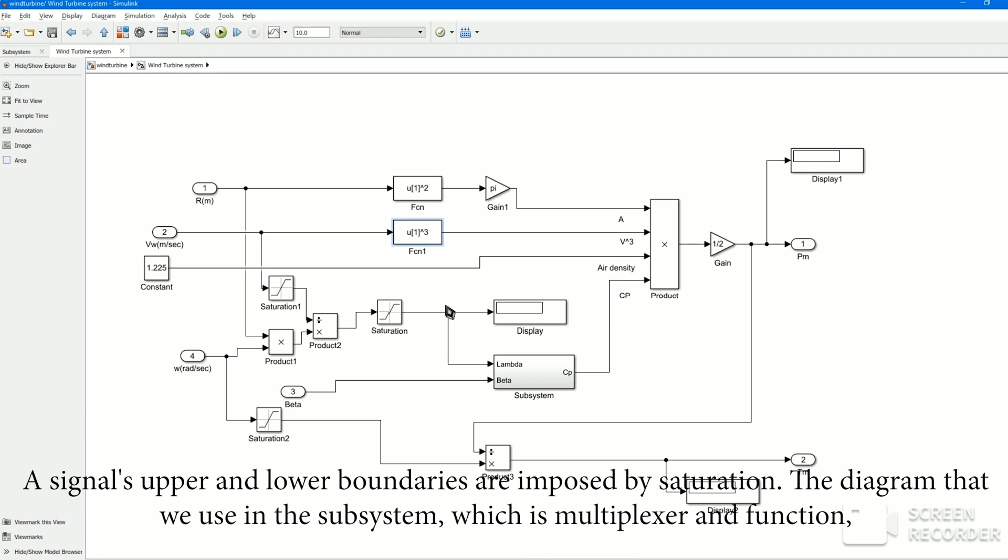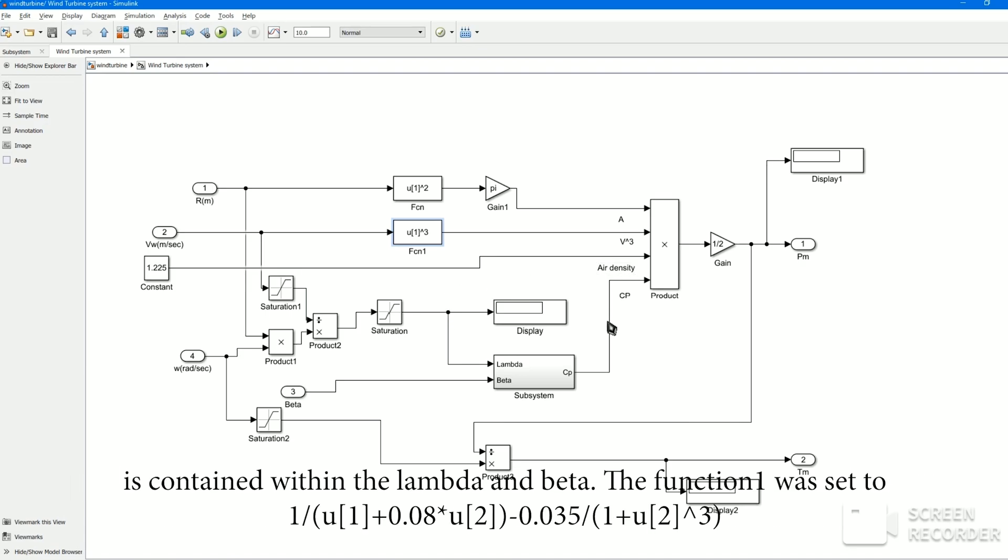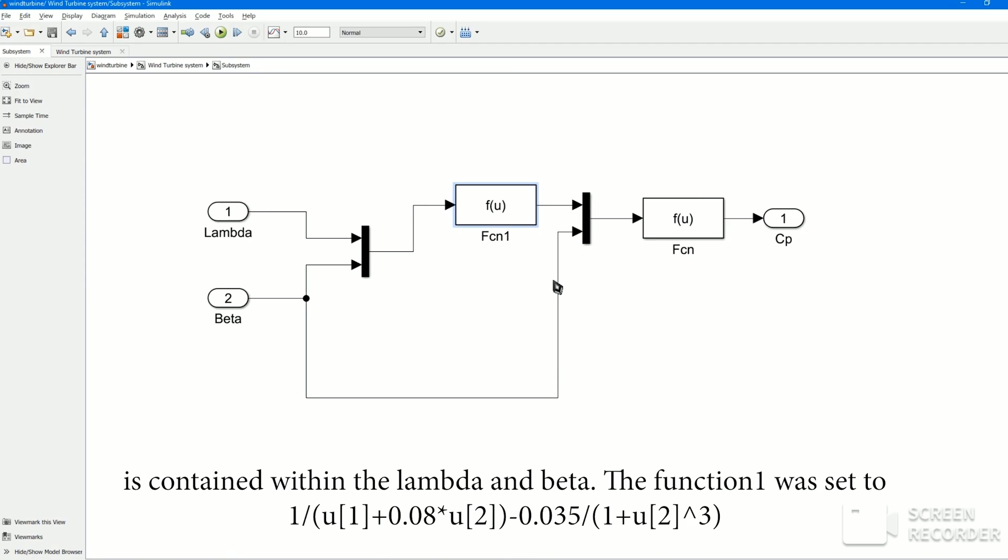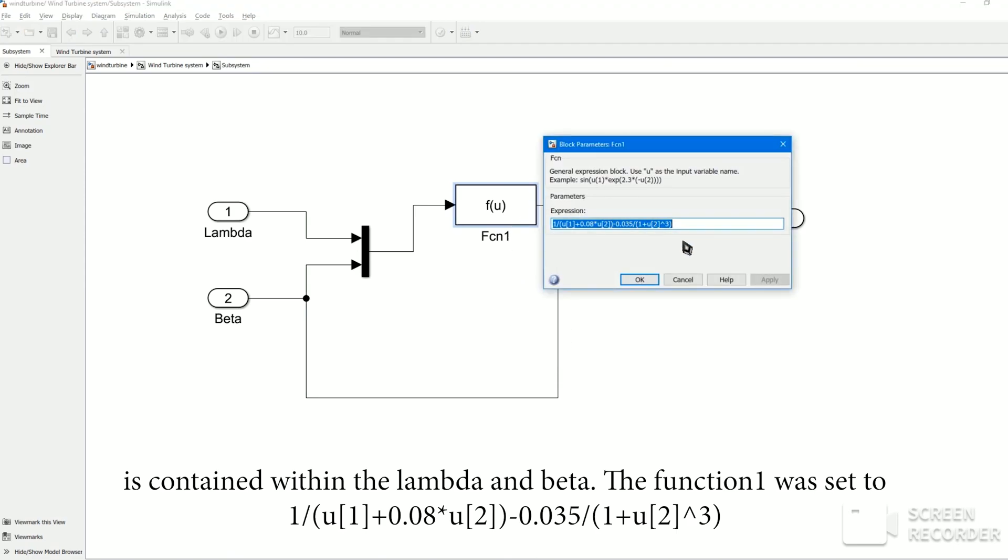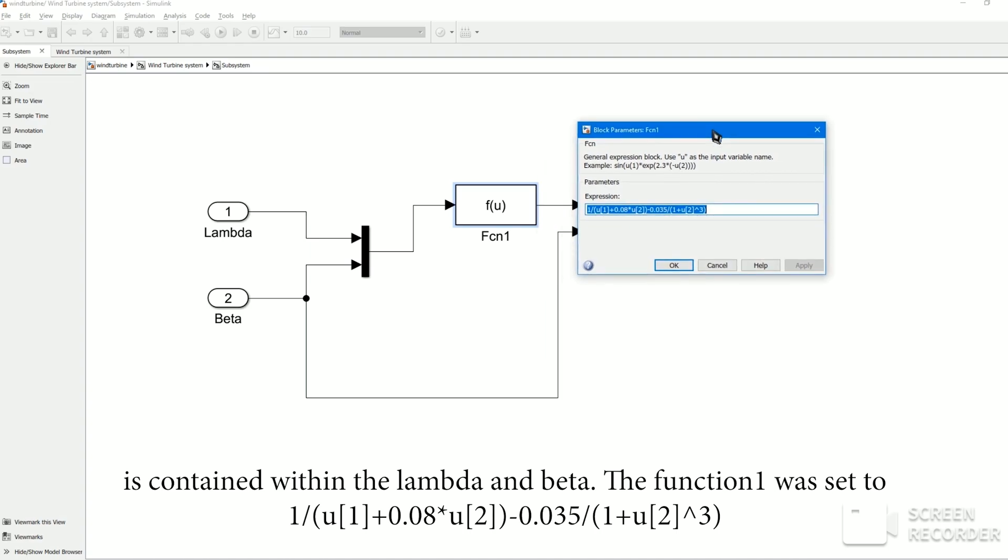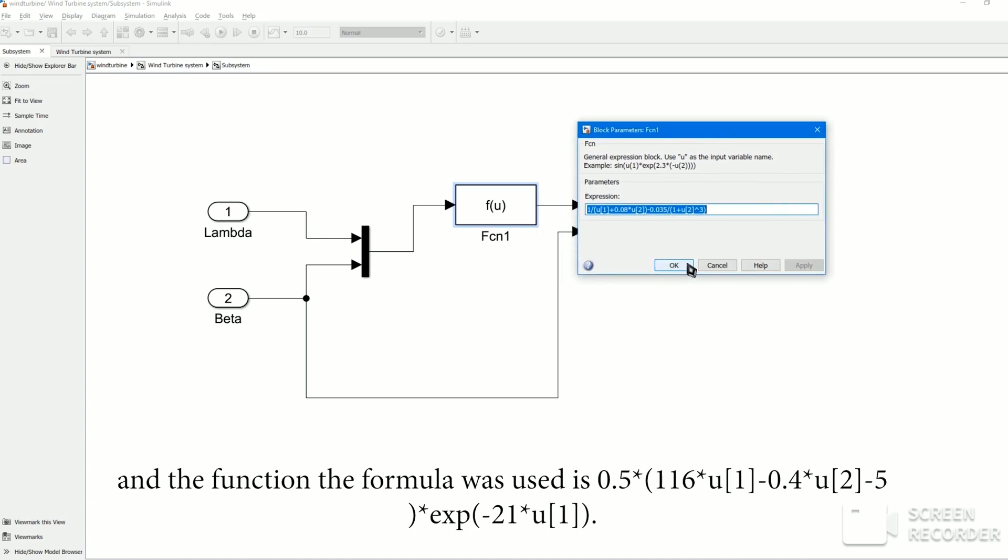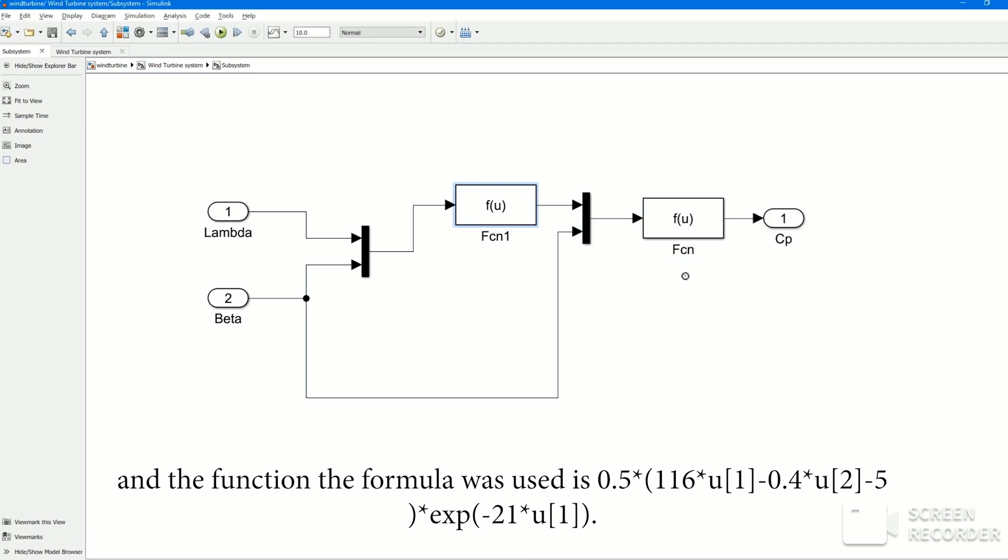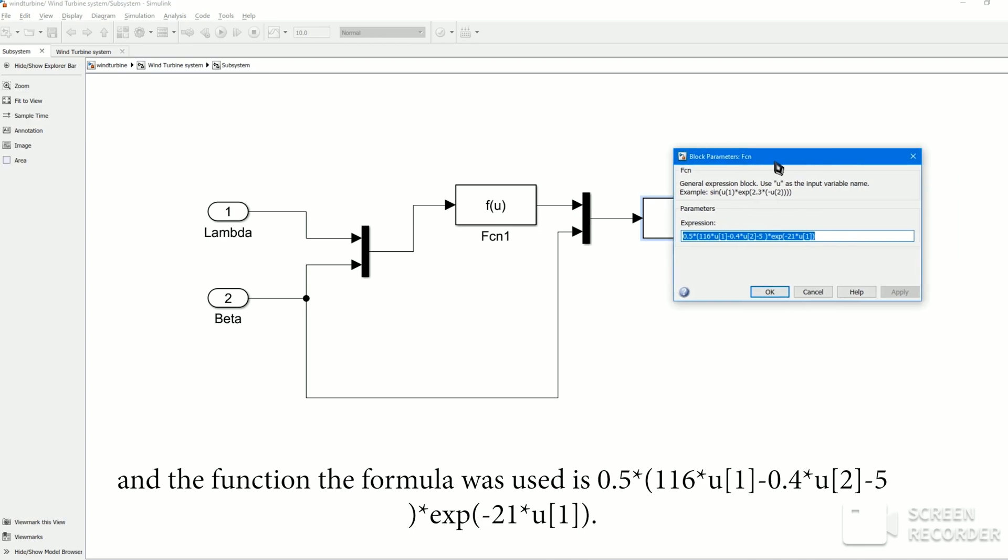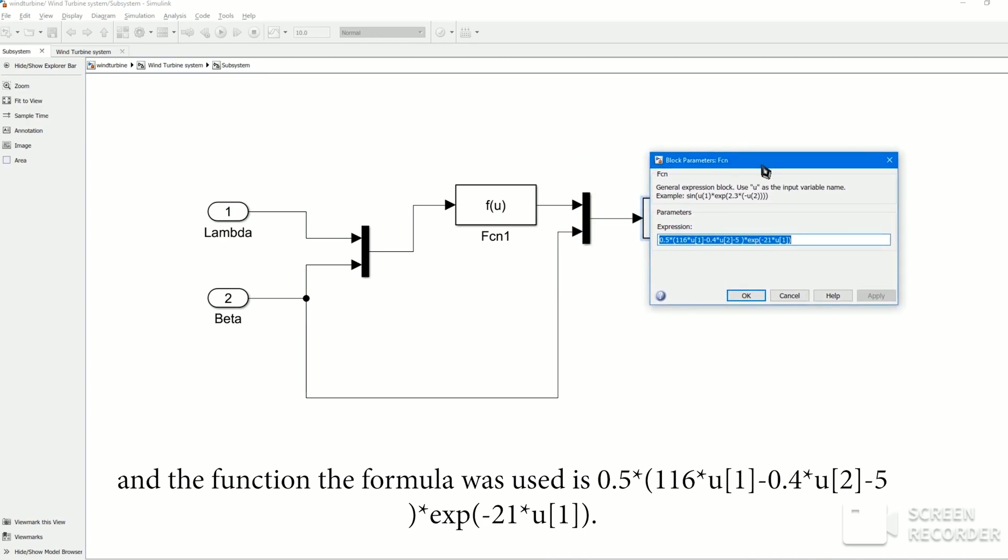The diagram that we use in the subsystem, which is multiplexer and function, is contained within the lambda and beta. The function 1 was set to 1/(U1 + 0.08*U2) - 0.035/(1 + U2)^3, and the function formula used is 0.5*(116*U1 - 0.4*U2 - 5)*e^(-21*U1).